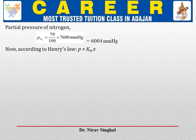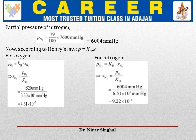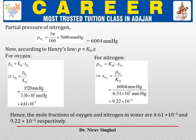According to Henry's law, P = KH × X. For oxygen: X_O₂ = P_O₂ / KH = 1520 / (3.3 × 10⁷) = 4.61 × 10⁻⁵. Likewise for nitrogen: X_N₂ = P_N₂ / KH = 6004 / (6.51 × 10⁷) = 9.22 × 10⁻⁵. Hence the mole fractions of oxygen and nitrogen dissolved in water are 4.61 × 10⁻⁵ and 9.22 × 10⁻⁵ respectively. This is one of the easiest ways to solve this numerical.